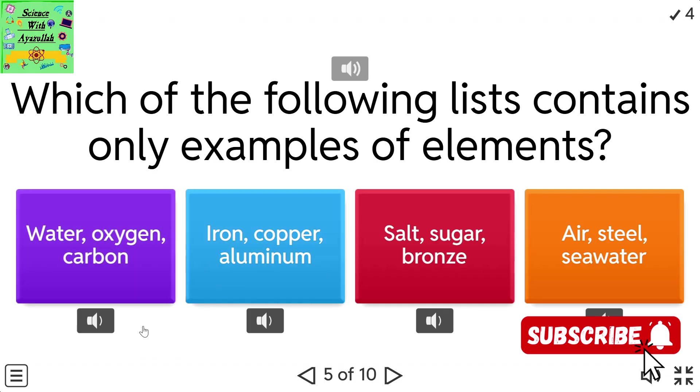Which of the following lists contains only examples of elements? Water, oxygen, carbon. Iron, copper, aluminum. Salt, sugar, bronze. Air, steel, seawater.